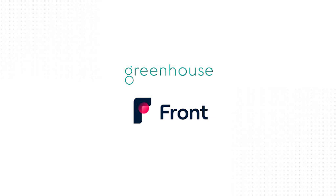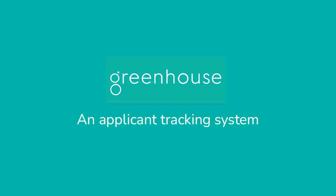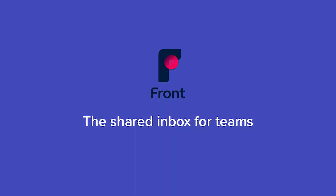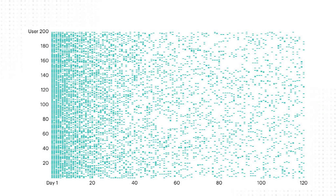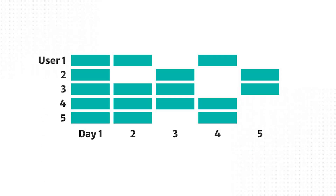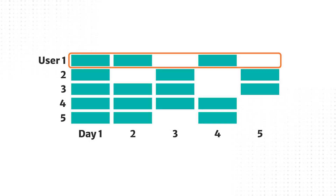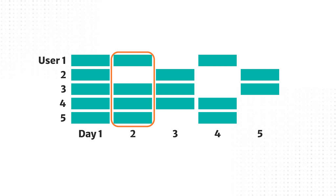Not really. The example I want to call out is two companies you may have heard of: Greenhouse and Front. Greenhouse is an applicant tracking system — if you have job recs on your website, Greenhouse will power those and help recruiters move candidates through the process. Front is a shared inbox for support teams, where multiple people can respond to emails and see conversations. I'm going to talk about these using a grid-style chart: looking at users and the days they used a product. The first user used the product on day one, day two, and day four — or you can look at a given day and see which users were active.